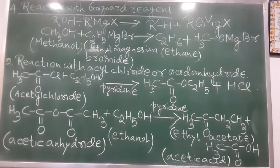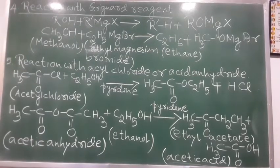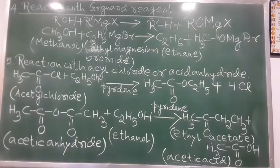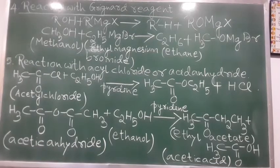Good morning, students of class 12. We were doing chemical properties of alcohols, so let's continue from today. I have written a reaction with Grignard reagent. Grignard reagents are alkyl magnesium halides — it could be aryl magnesium halide also, but for now we are focusing only on alkyl magnesium halides. So: ROH + RMgX gives R-H + ROMgX.